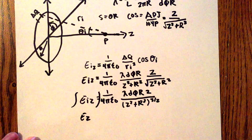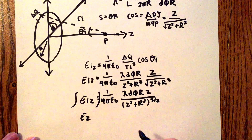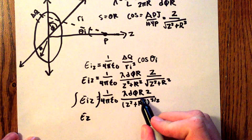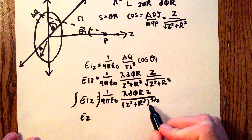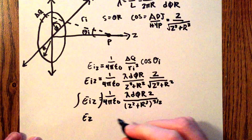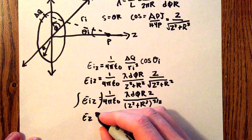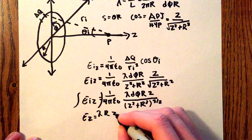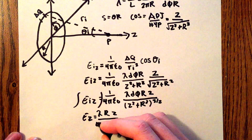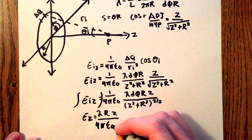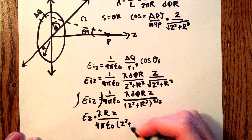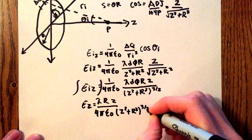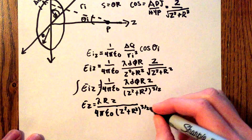Now we're going to take the integral of both sides. We can see that we can pull out some constants: the linear charge density lambda is a constant, r is a constant, z is a constant. So we have lambda r z over 4 pi epsilon naught times z squared plus r squared to the three-halves power.